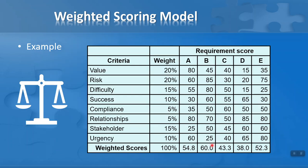Now let's look at a more elaborate example with more detail. On the left-hand side of this table, I've taken the eight criteria we looked at earlier. These will be used to decide which of five requirements should be done on the right-hand side. Let's say I'm conducting a requirements gathering exercise with five requirements labeled A, B, C, D, and E. I want to know which ones to do first, which are most important, and which are least important. I've worked out the weighting for each criteria: value and risk are 20% each, difficulty is 15%, success is 10%, compliance and relationships are 5% each, and we have stakeholder and urgency listed. These add up to 100%.